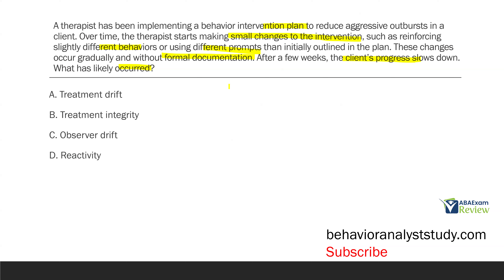Treatment drift occurs when the original plan starts to change gradually over time. This is going to happen with almost every plan, which is why we need to supervise and train on a regular basis to prevent these small but gradual changes. Treatment integrity is not occurring here — if anything, we're lacking treatment integrity. Observer drift has to do with measurement: the way we're measuring something is changing when it shouldn't be. Reactivity is when the person being observed reacts to the observer and changes their behavior — not what's happening here. What's happening is this therapist, over time, is making small, subtle changes to the intervention, and as a result, treatment drift is occurring.